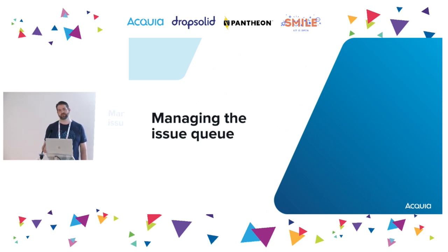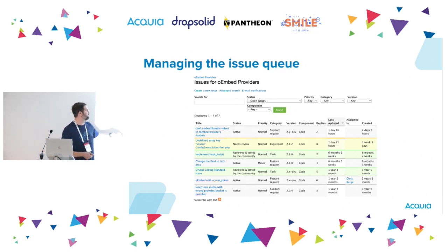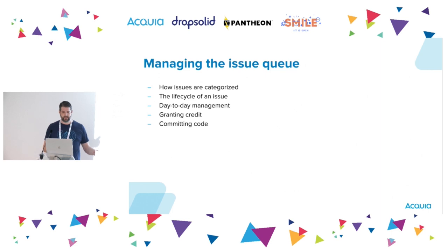Now let's talk about the issue queue. Issues are the primary way for the open source community to interact with the project's maintainer — a place to document and to collaborate. We're going to talk about things like category, component, and different statuses and what those mean. At the high level, issues are categorized to help maintain a sense of order and sanity. Issues have statuses which identify where they are in the issue's life cycle. We'll also talk a bit about the day-to-day — how do you actually manage the queue, how do you grant credit for accepted contributions, and how to commit the code.